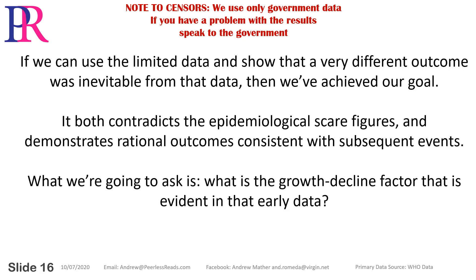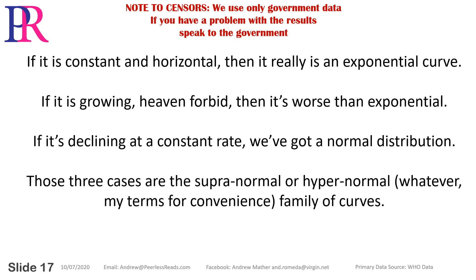What we're going to ask is: what is the growth decline factor evident in that early data? If it is constant and horizontal, then it really is an exponential curve. If it is growing — heaven forbid — then it's worse than exponential. If it's declining at a constant rate, we've got a normal distribution. Those three cases are the supranormal or hypernormal family of curves.